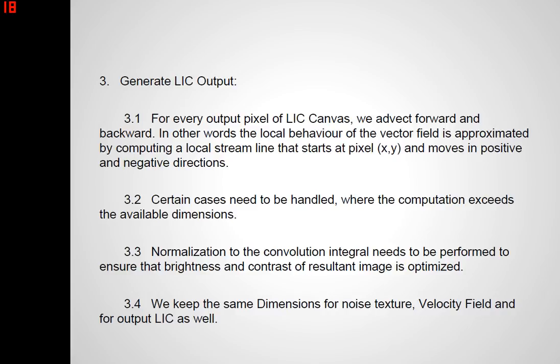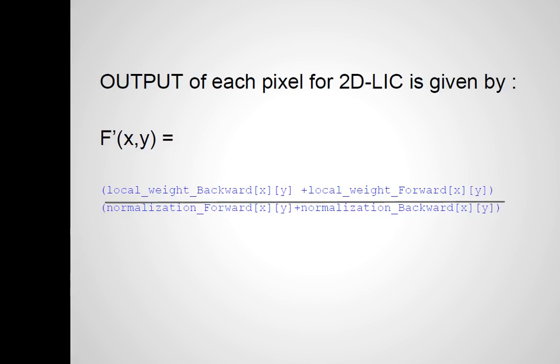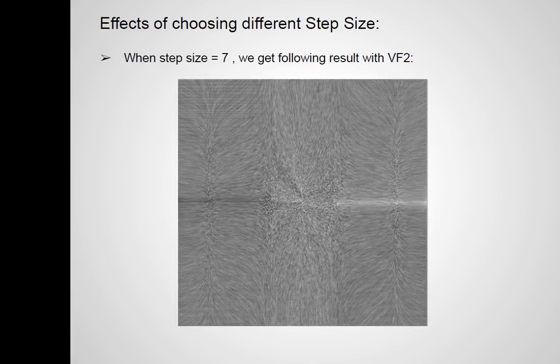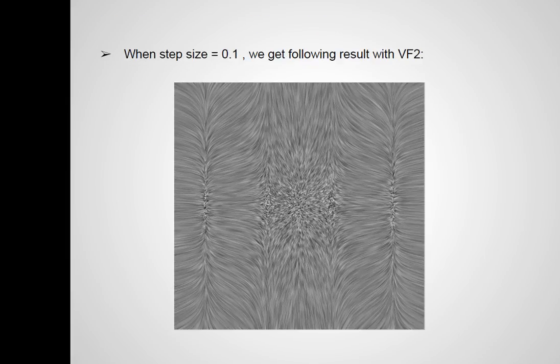The dimensions in my implementation are 512 by 512. I want to show the significance of step size — try to keep the step size as low as possible, or as close to 0.1 as possible. This is the result: a 2D LIC result with vector field 2 where step size is 10. For example, if the step size is 0.1, then the result is more beautiful — I think it's a perfect image.